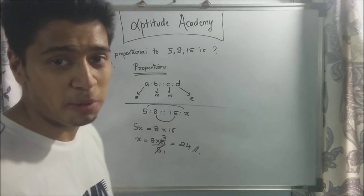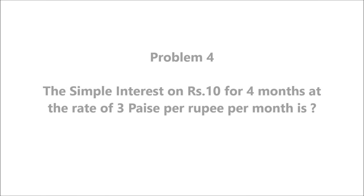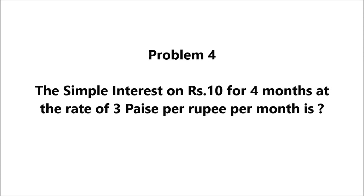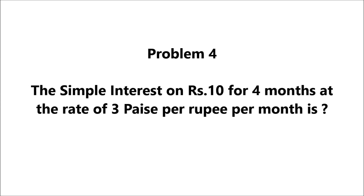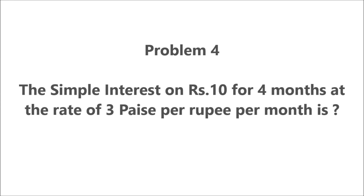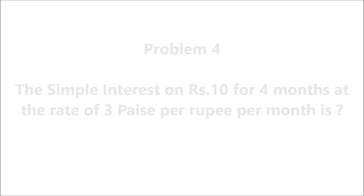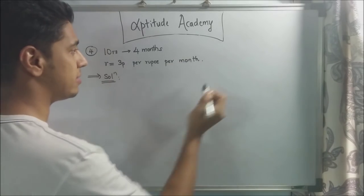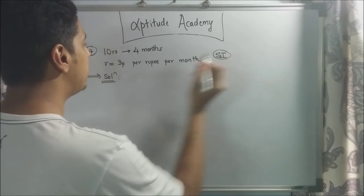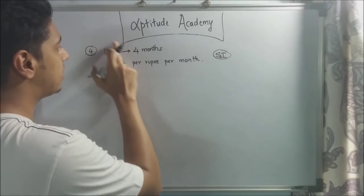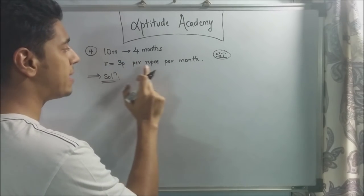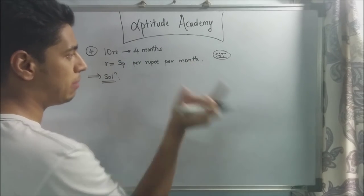Let's go on to problem number 4. The simple interest on rupees 10 for 4 months at the rate of 3 paise per rupee per month is what? The fourth problem is based on simple interest — 10 rupees invested for 4 months at a rate of 3 paise per rupee per month.